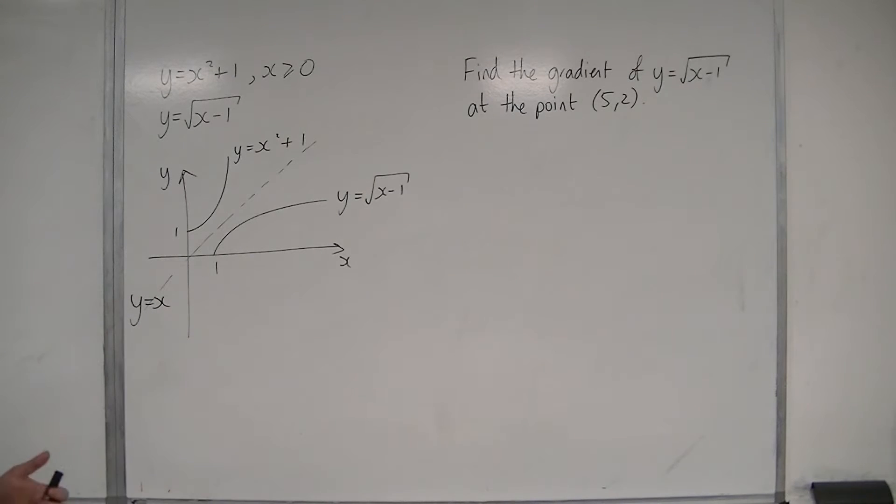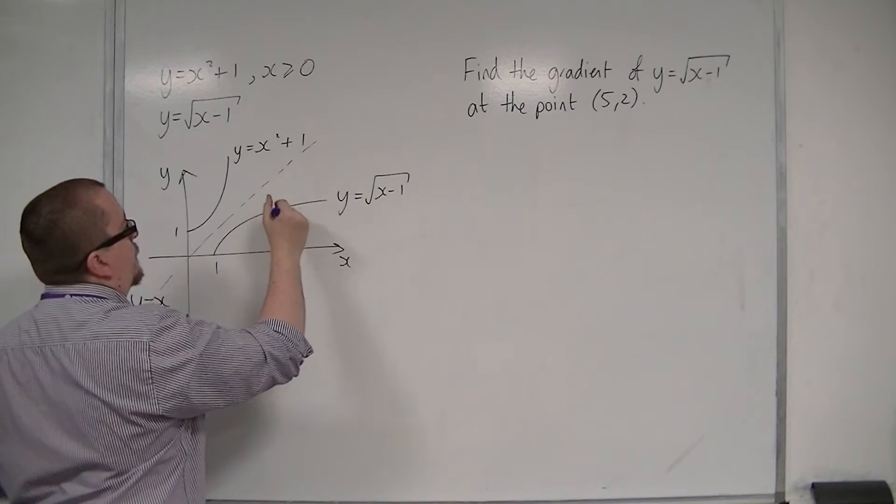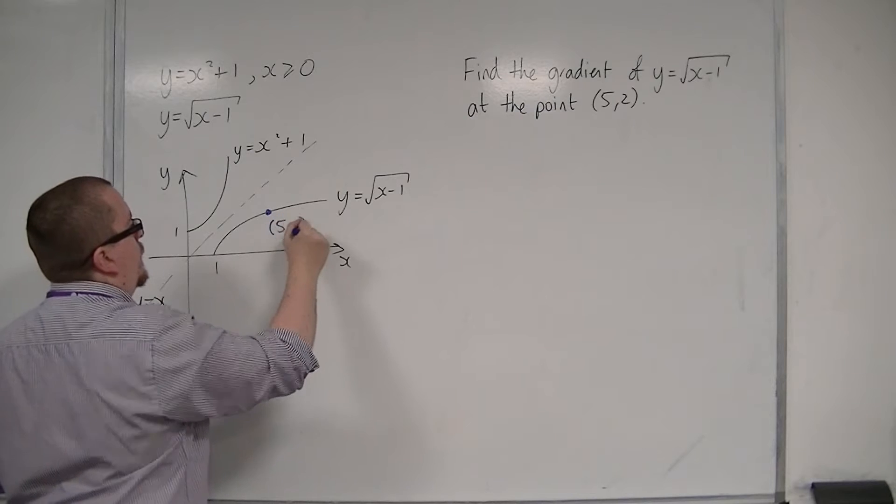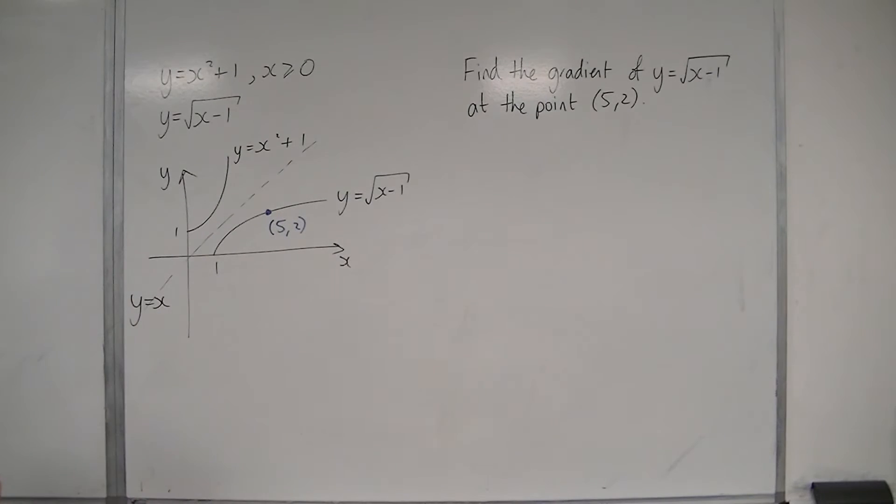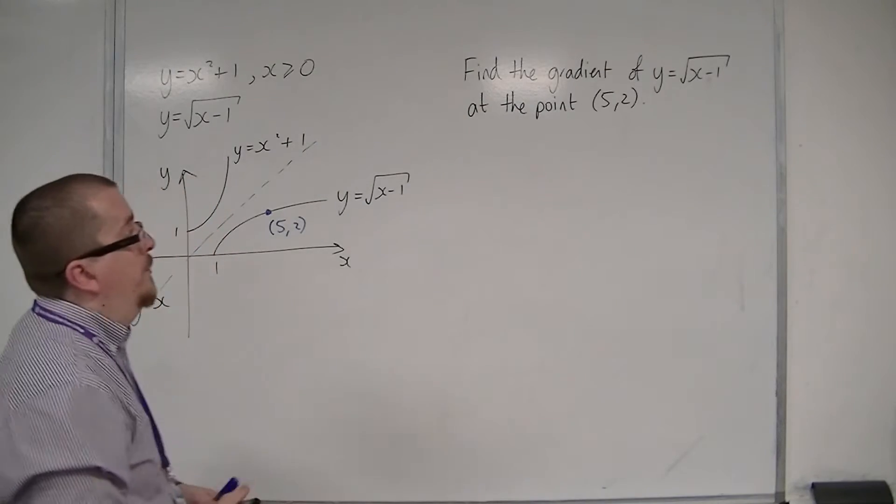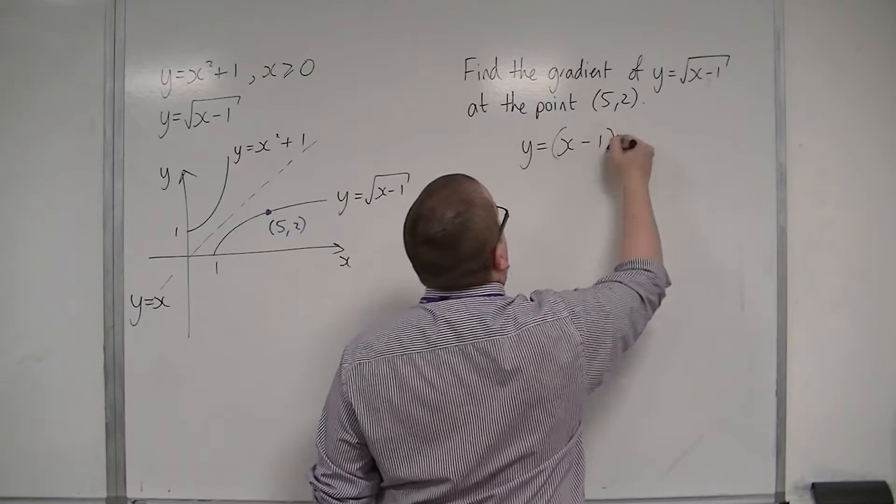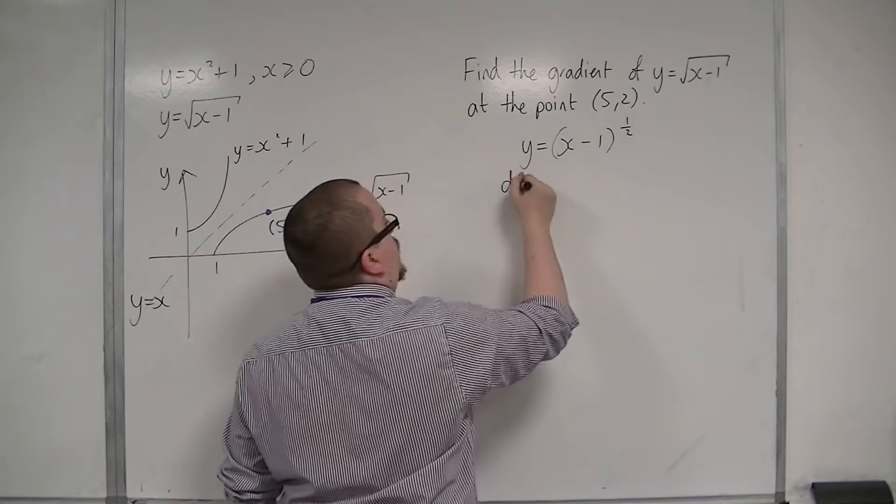So, if I'm asked to find the gradient of y equals the square root of x minus 1 at the point (5,2), then this point would be over here somewhere. If I was to show this using the chain rule, which I can do, y equals (x minus 1) to the power of 1/2. And differentiate that.